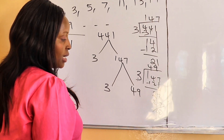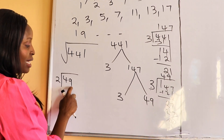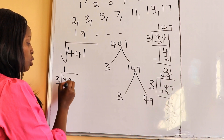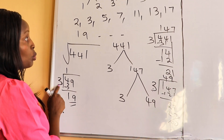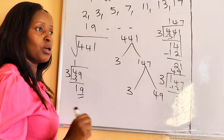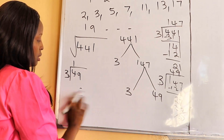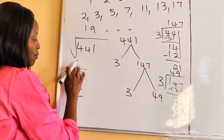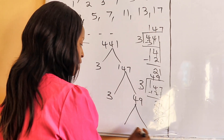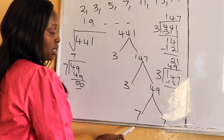Now we check 49. Is it divisible by two? No, because the last digit is odd. We try three: it doesn't divide evenly. The number ends in nine, so it's not divisible by five. We go to seven — seven times seven is 49. So our quotient is seven and our divisor is seven. We are done because we have reached prime numbers at the bottom.